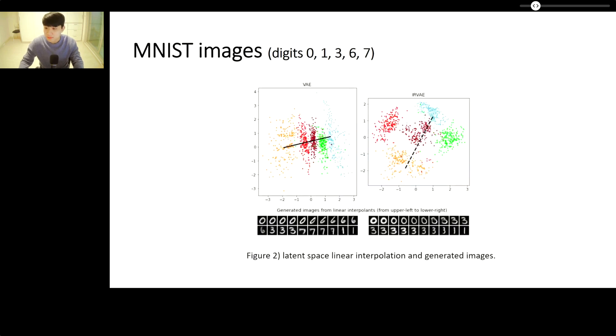To highlight this difference, we introduce one interpolation example. Given two images 0 and 1, we linearly interpolate between these two digits in the latent space. In the VAE representation space, 0 transitions to 6, goes through 3 and 7, and then transforms to 1. On the other hand, in IRV representation space, 0 changes to 3 and then to 1. Clearly, IRV produces shorter and smoother interpolation results than VAE.